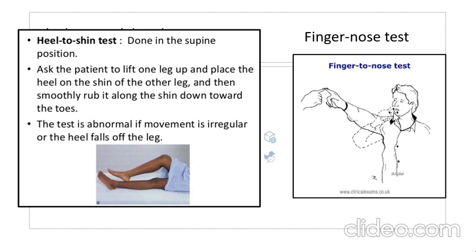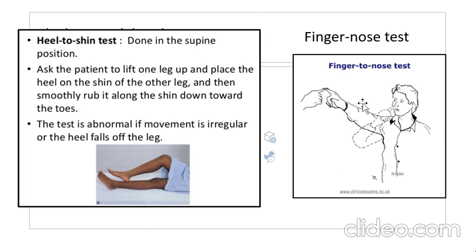For the finger-nose test, the subject touches the examiner's finger and then their own nose. The examiner moves their finger on a three-dimensional plane and the subject repeats the movement, testing coordination and smooth movement.